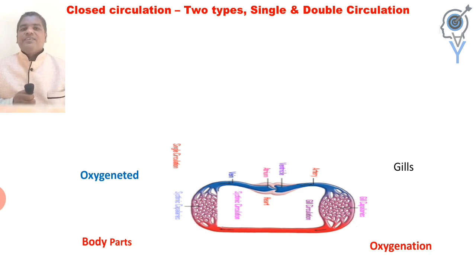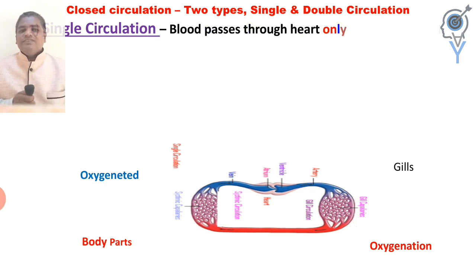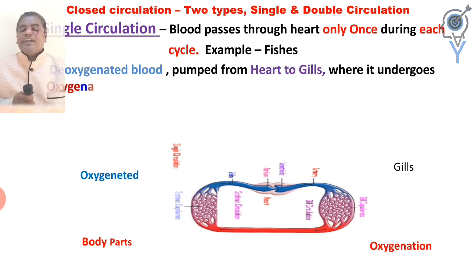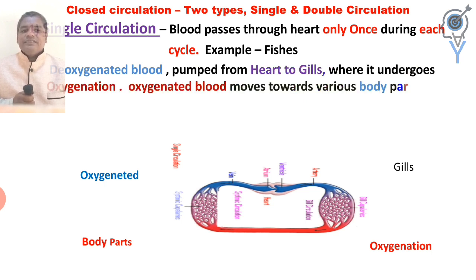In closed circulatory systems, there are two types: single circulation and double circulation. The type of circulation depends on the closed circulatory system of the organism.